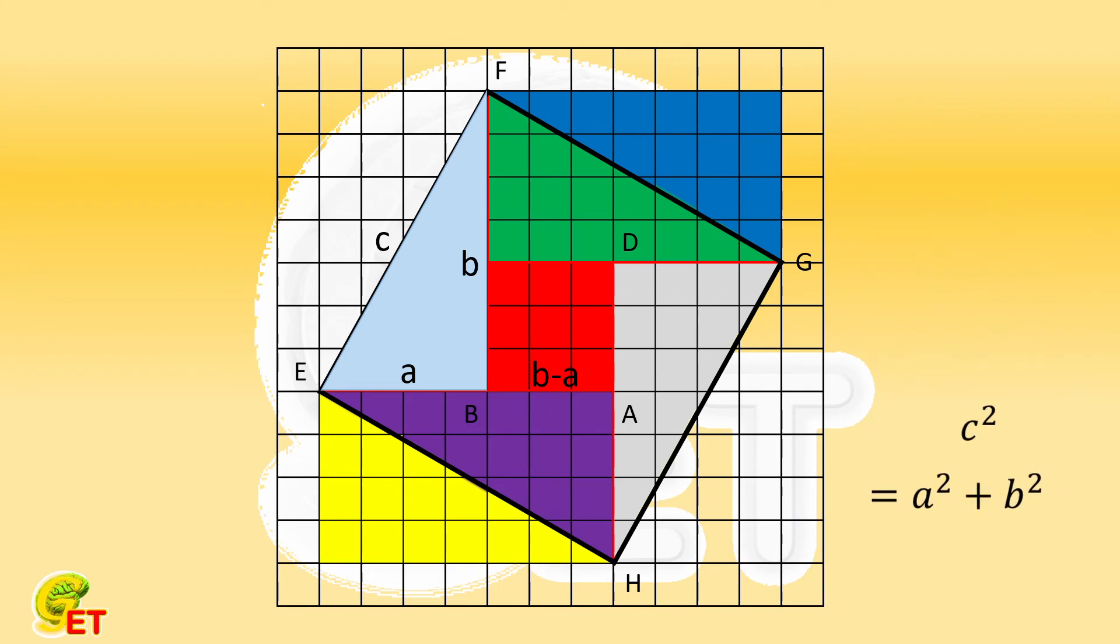Square of C is equal to square of A plus square of B. That is the Pythagorean theorem. Thank you for watching, and see you next time.